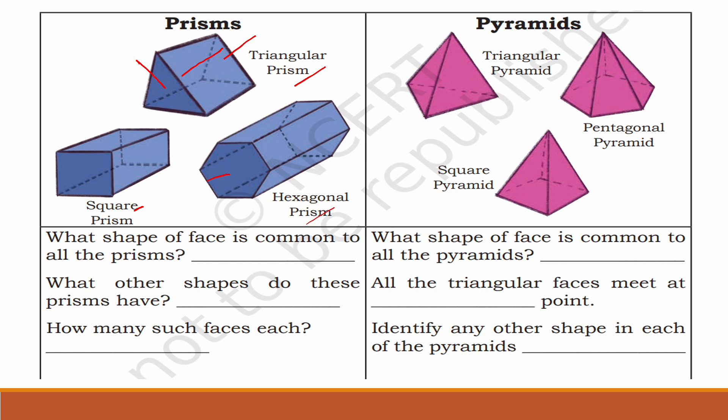See this hexagonal prism — it has two identical bases that are hexagonal in shape. Then the square prism has two identical square bases. That is why it is called a square prism. The sides connecting the bases are flat — they can be rectangles or parallelograms. What shape of face is common to all the prisms? Rectangle. The flat sides connecting the bases are rectangles.